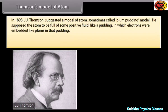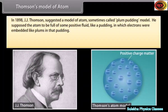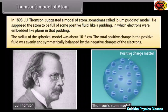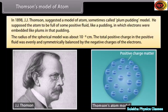Thomson's model of atom: In 1898, J.J. Thomson suggested a model of atom, sometimes called the plum pudding model. He supposed the atom to be full of some positive fluid like a pudding, in which electrons were embedded like plums. The radius of the spherical model was about 10 raised to the power minus 8 centimeter. The total positive charge was evenly and symmetrically balanced by the negative charges of the electrons. But this model was discarded because it failed to satisfy the results of experiments performed by Rutherford.